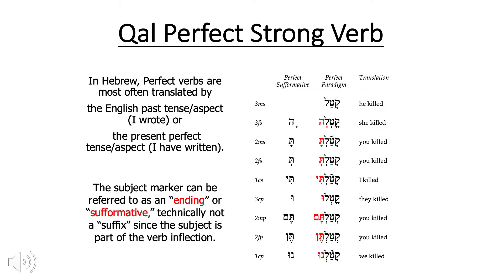That brings us to verbs. There are seven different stems: Qal, Niphal, Hiphil, Hophal, Piel, Pual, and Hithpael. We also have perfect and imperfect verbs, and strong and weak verbs. Strong verbs keep all three base letters through all verb forms; weak forms will lose or sometimes double a particular letter depending on the stem. Qal verbs are the simplest — hence the name qal, meaning swift. The perfect is the subformative form, with suffixes indicating the subject markers. The subject markers are the same for all seven stems, shown here in red.